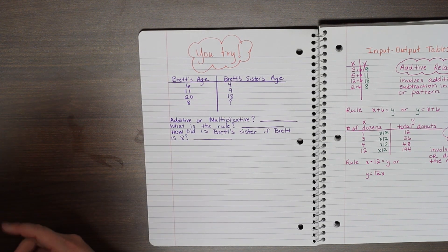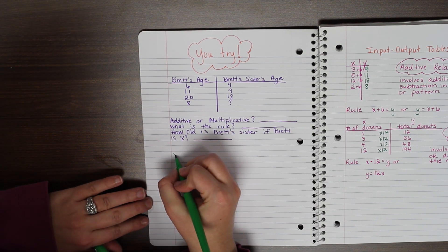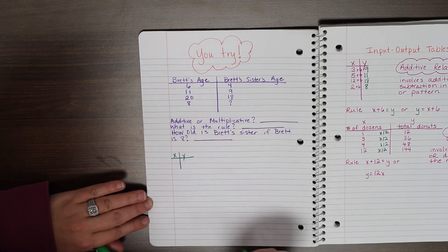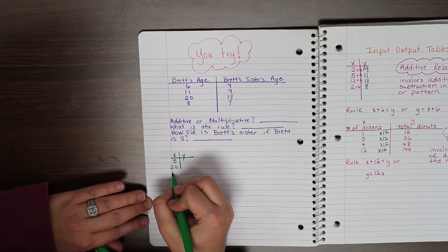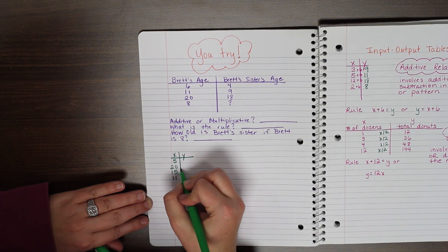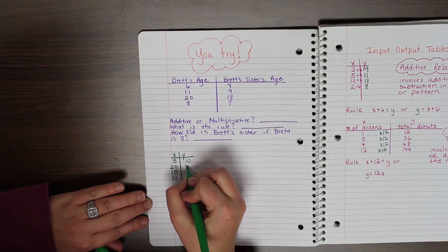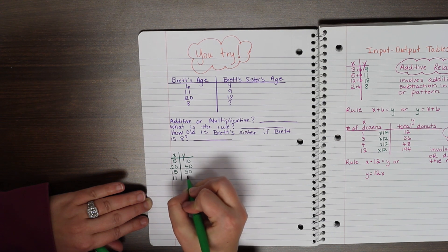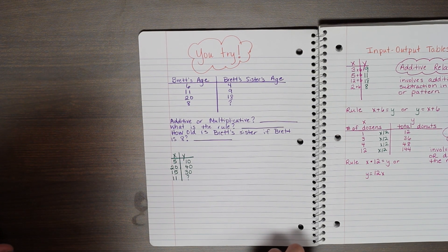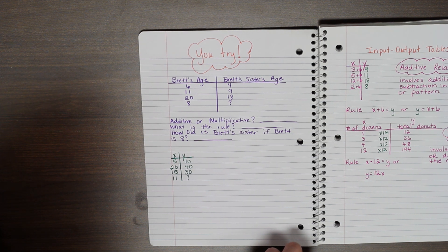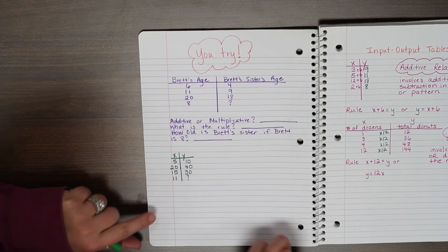Alright, on your next one that you're going to try on your own, we're going to do an x and y. And again, I want you to answer these three questions. Is it additive or multiplicative? What is the rule? And what is the value of y if x equals 11?